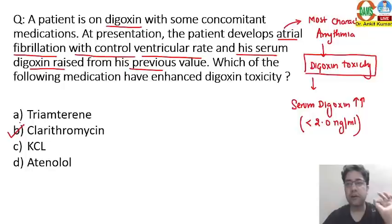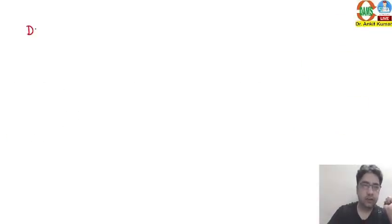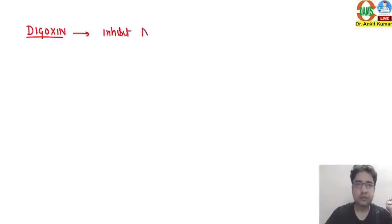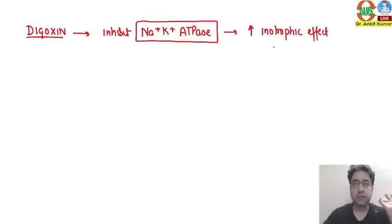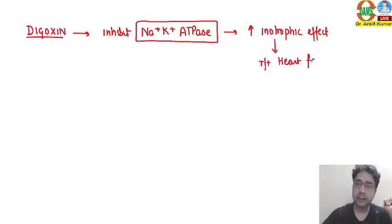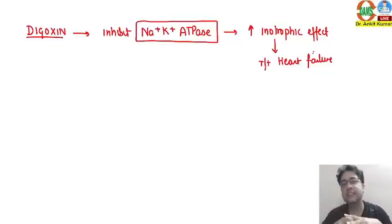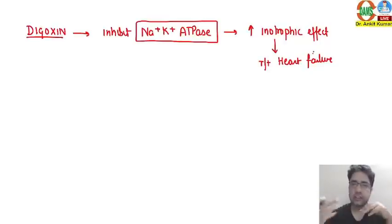To understand this, we need to recall the mechanism of action of digoxin. Digoxin inhibits one channel on our myocardial fibers — sodium-potassium ATPase. The action of sodium-potassium ATPase leads to an inotropic effect, meaning it increases the force of contraction. Because of this, cardiac output increases, and any inotropic drug is given in the treatment of heart failure, where force of contraction and cardiac output are reduced.